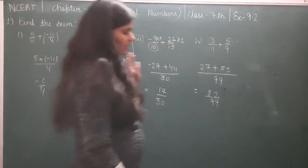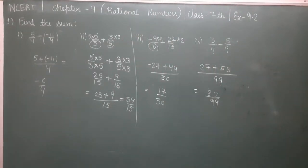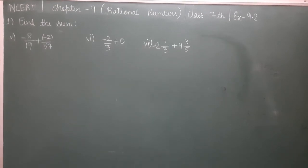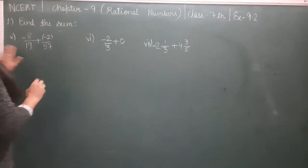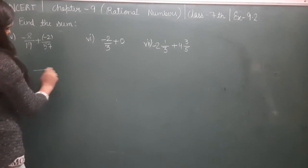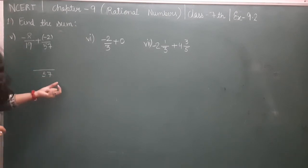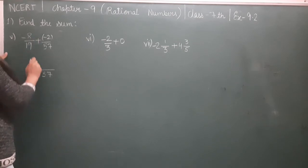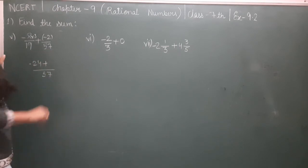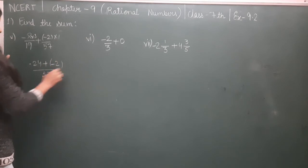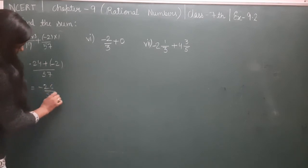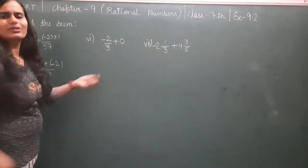Next, the 5th part is minus 8/19 plus minus 2/57. We take LCM of 19 and 57, which is 57. 19 times 3 is 57, so 3 times minus 8 becomes minus 24. Plus sign stays. 57 divided by 57 is 1, times minus 2 equals minus 2. Minus 24 and minus 2 equals minus 26/57.